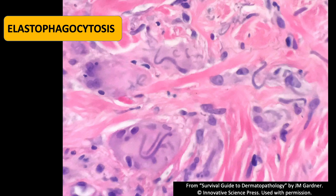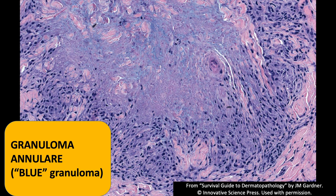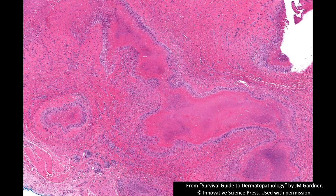Some people give it fancy names like actinic granuloma, but basically if you see this, it's a totally normal finding. If you have sun damage and a granulomatous pattern, you can see this. Here's another example of how blue granuloma annulare can look.